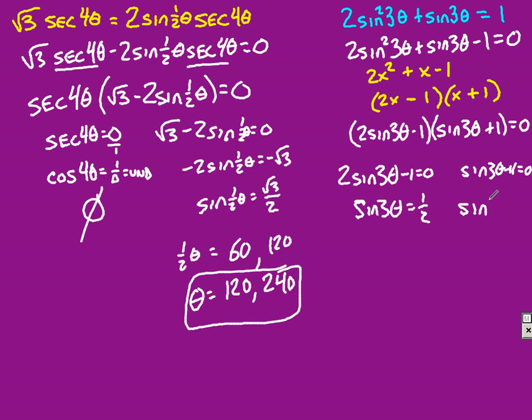And over here, sine of 3 theta, equals negative 1. So, this one, sine equals negative, or, sine equals 1 half at 30 degrees, and a quadrant of 2 at 60 degrees. That's what 3 theta equals, that's your inside, which means theta here is 10 degrees and 20 degrees.